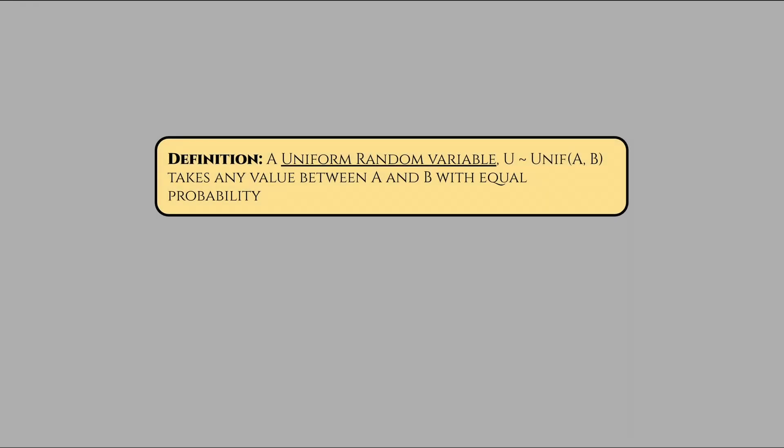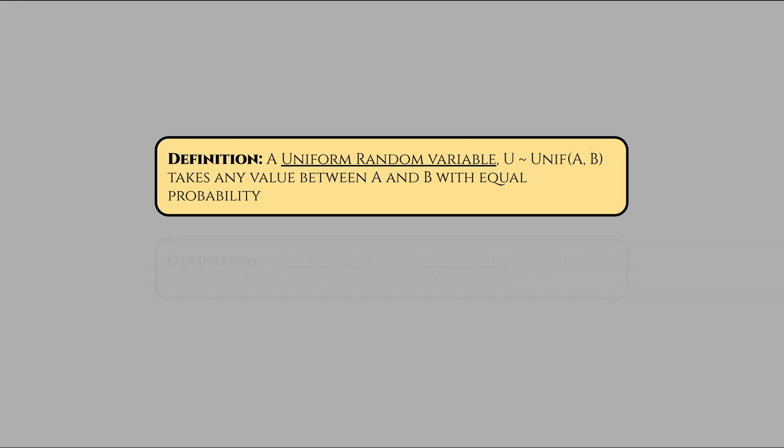First, we need a bit of terminology. Call a uniform(a, b) random variable one that can take any value between a and b with equal probability. So for example, u distributed unif(0,1) means that the value of u, our random variable, could be any value that is greater than 0 or less than 1. Meanwhile, a Bernoulli random variable takes only the values of 0 and 1 with some probability. It models a single yes, no, or success failure trial. This means that if we map the outcome of our coin flips to the values 0 and 1 for tails and heads, respectively, and call that a random variable s, then s is distributed Bern(0.5).